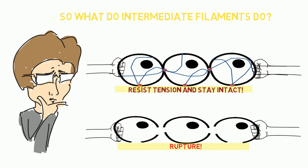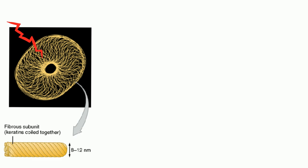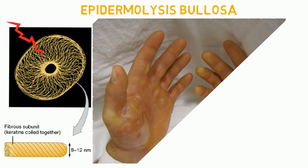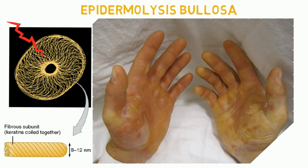So when humans have mutations to keratin, they have a disease known as epidermolysis bullosa, which is a skin disorder that causes blisters.